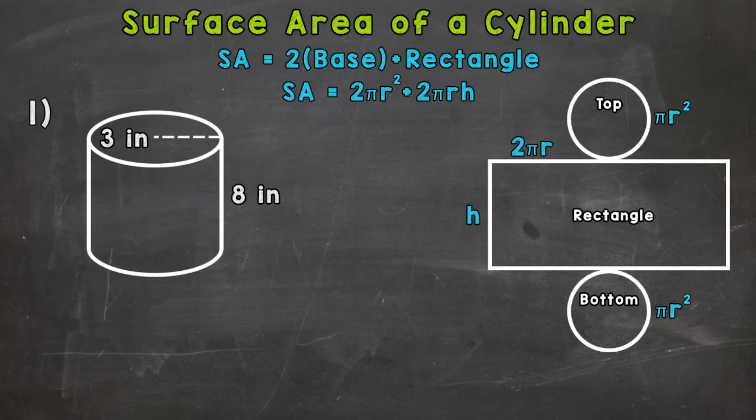On the left-hand side of your screen, we have the cylinder that we're going to find the surface area of. It has a given height of 8 inches, and our base has a radius of 3 inches.